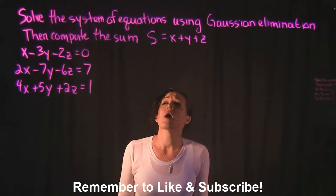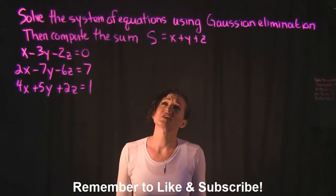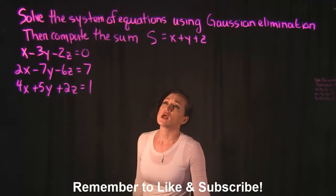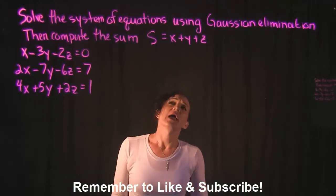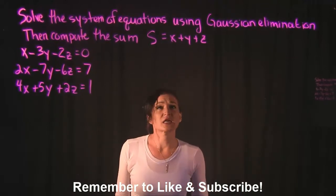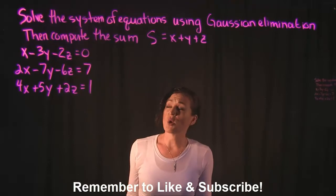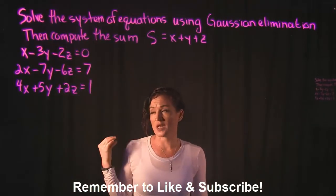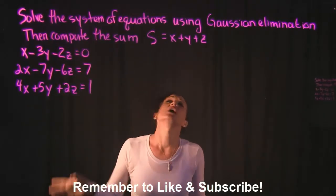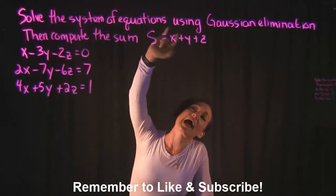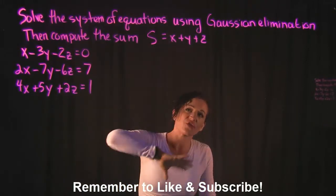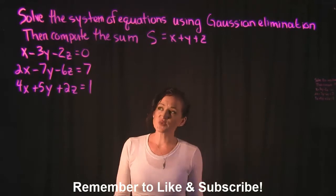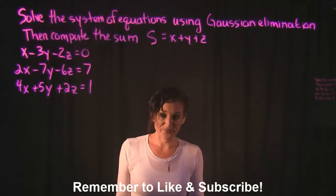For the following problem we're going to solve the system of equations using Gaussian elimination, then compute the sum s equals x plus y plus z. After we solve the system and get our values for x, y, and z, we add them together to get this sum. First we need to focus on solving this system.